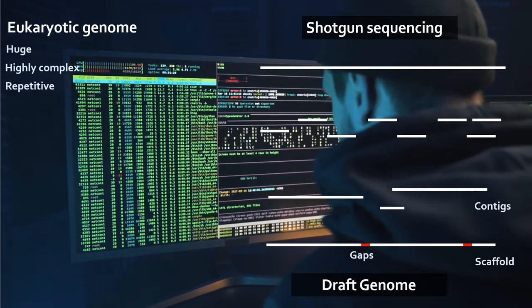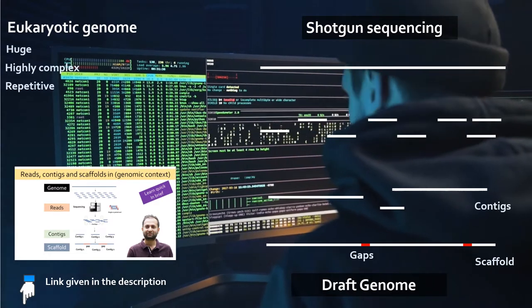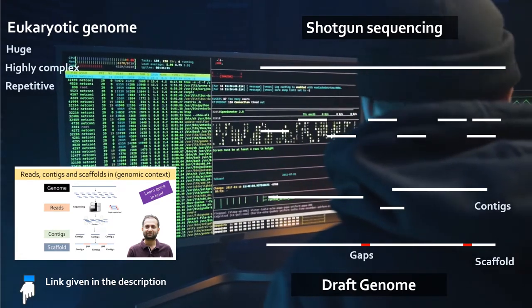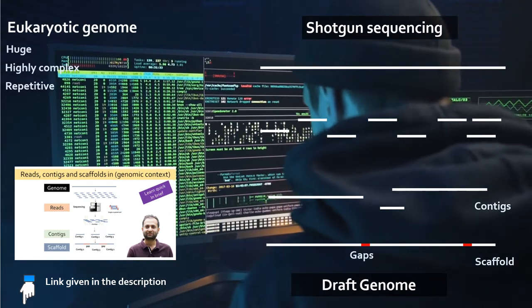You can learn more about what reads, contigs, and scaffolds are and how they differ from each other in my other video. Draft genomes are still suitable for several applications such as gene identification, DNA marker development, and others.